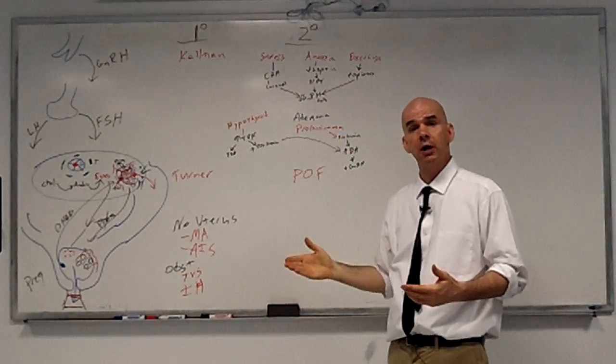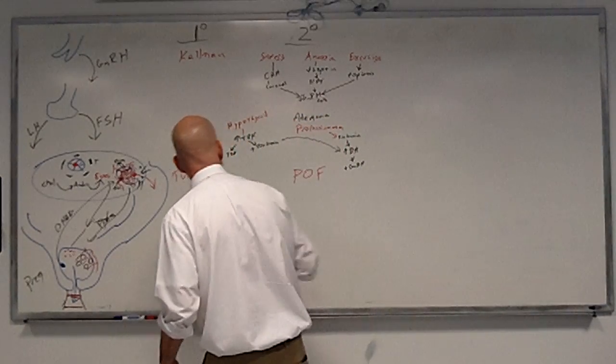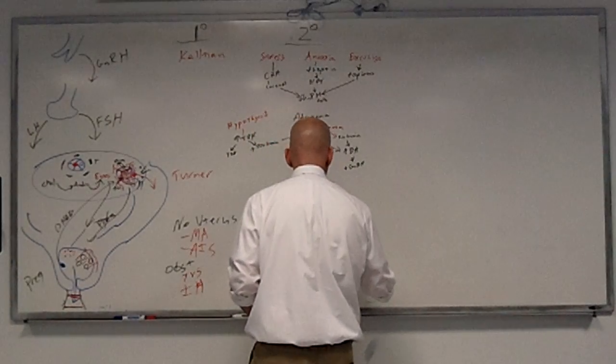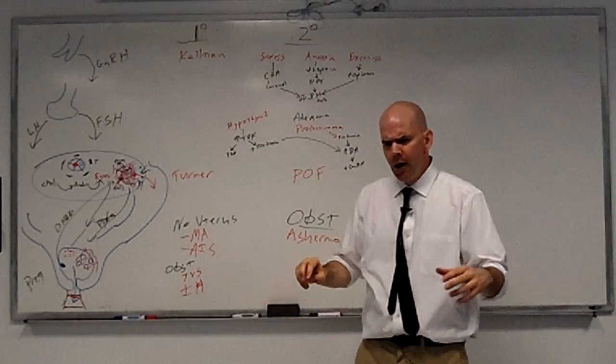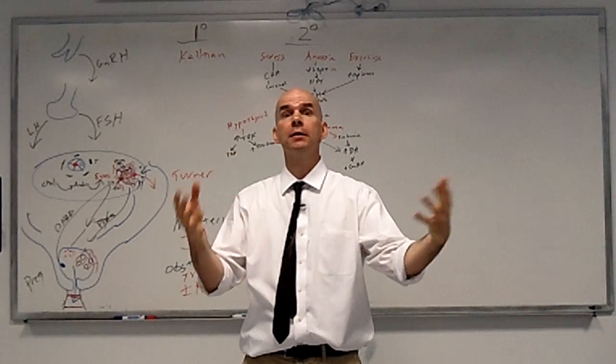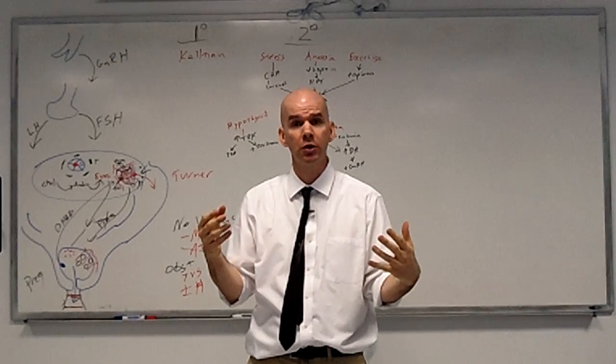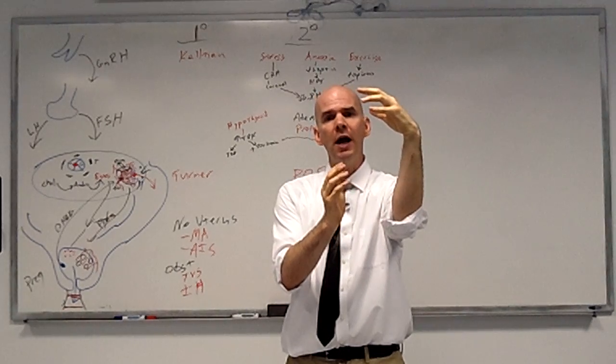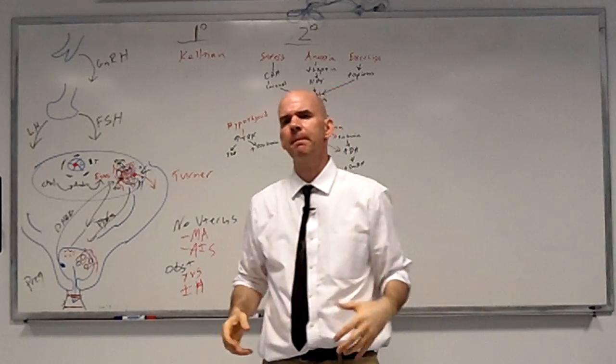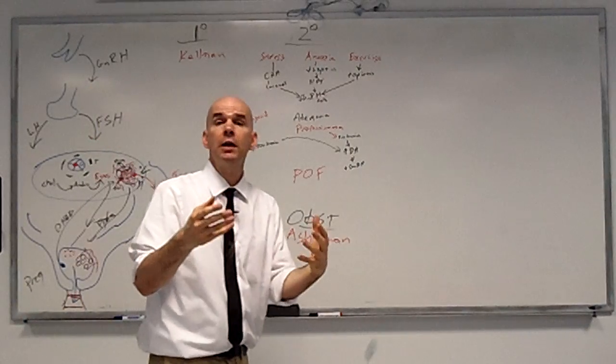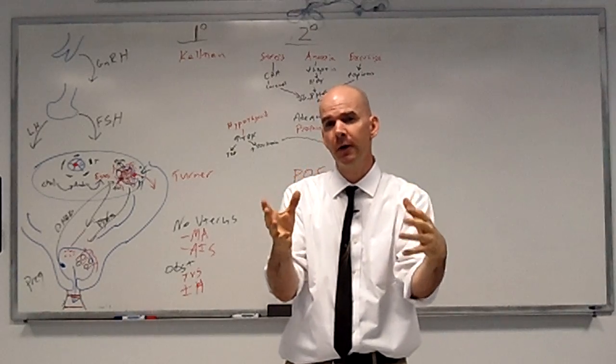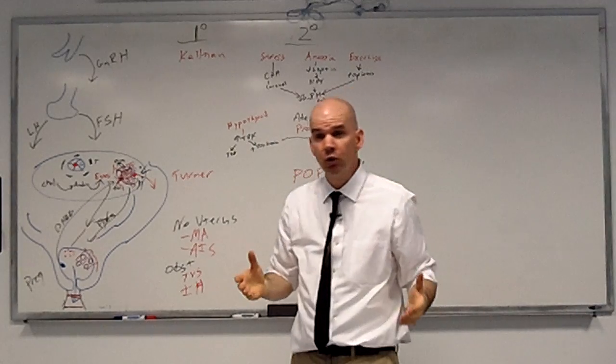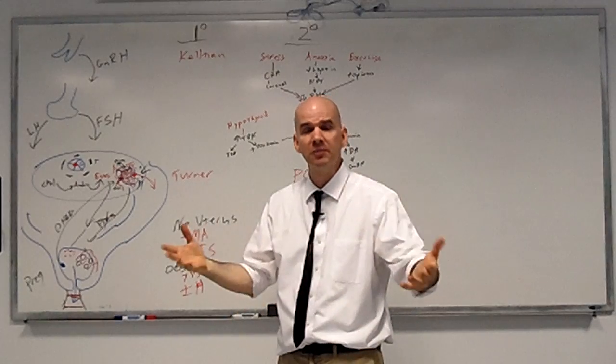Now we come to uterine causes of secondary amenorrhea, and these are all going to be obstructive. First one we'll talk about is Asherman syndrome. Here's how that works. All right. If a woman, say, has like a hydatidiform mole, or if she has an incomplete abortion or something, and needs a dilation and curettage, then they'll put an instrument in, called a curette, into the uterus, and scrape away some of the endometrium. If in their scraping they're overzealous and take away too much of the decidua basalis, like the root layer of the endometrium, then you can get an inflammatory reaction, and the uterine walls will stick to one another. When they stick to one another, then the blood's not able to pass out. You've got obstruction that keeps the menstrual period from flowing.